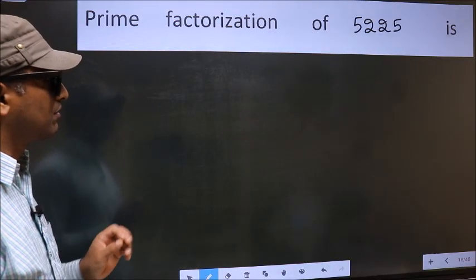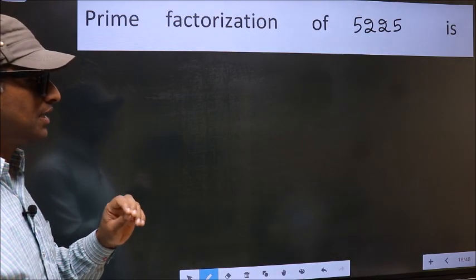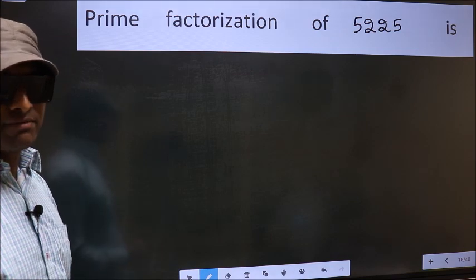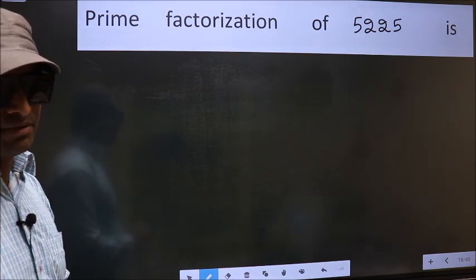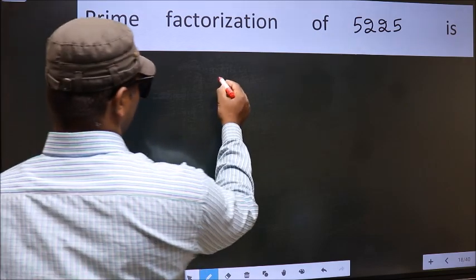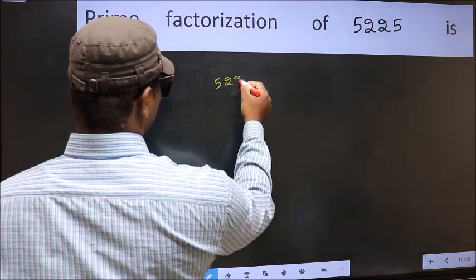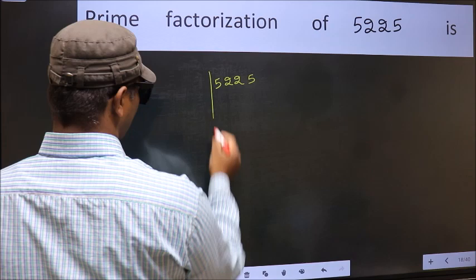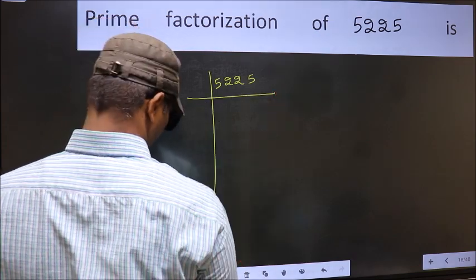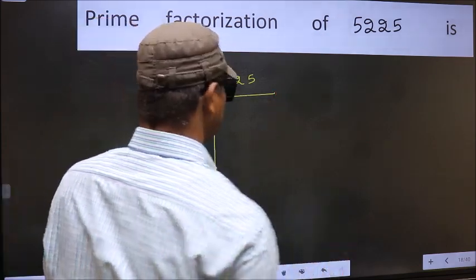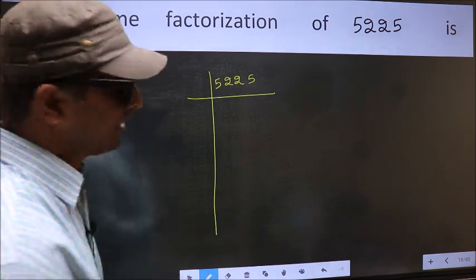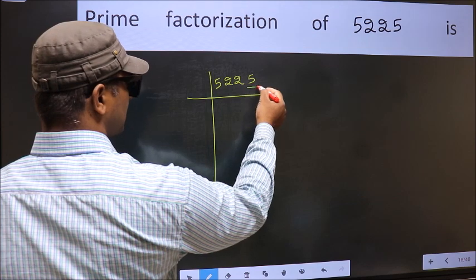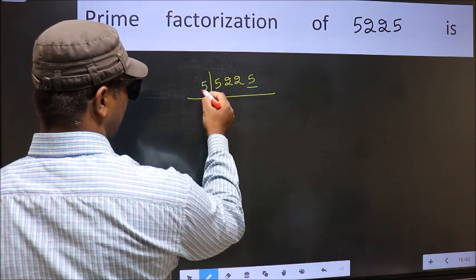Prime factorization of 5225. To do prime factorization, first we should frame it in this way. 5225. This is your step 1. Next, in this number the last digit is 5, so take 5.